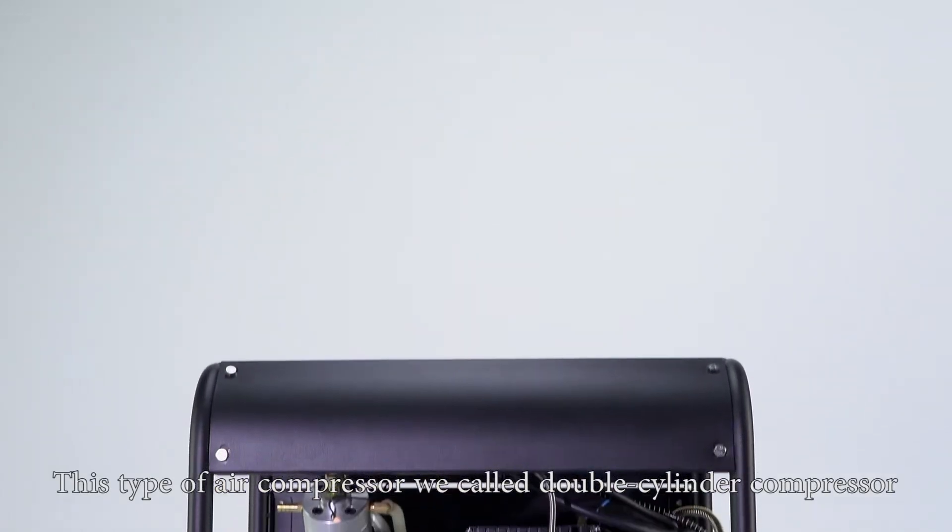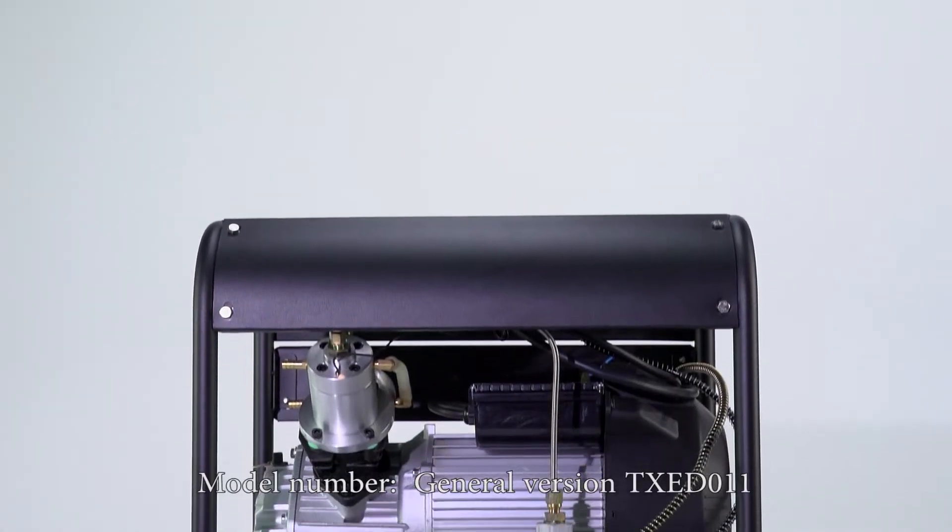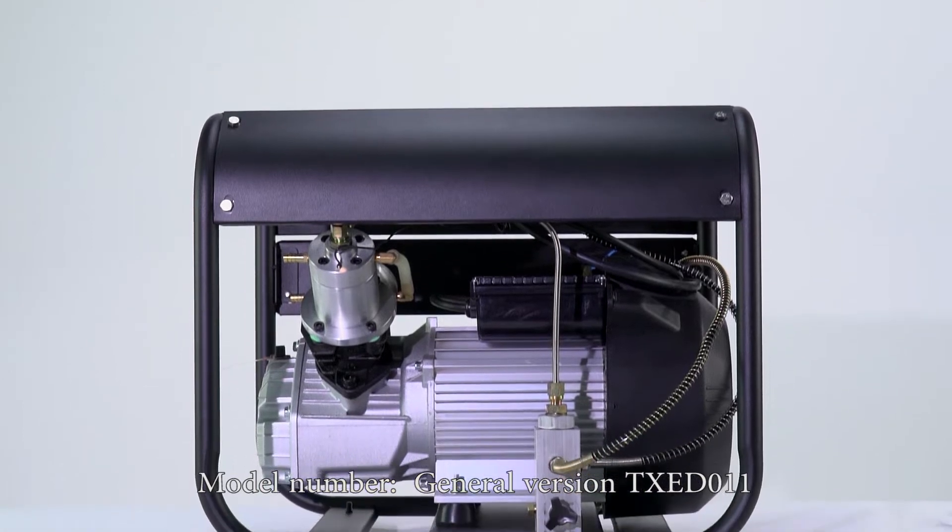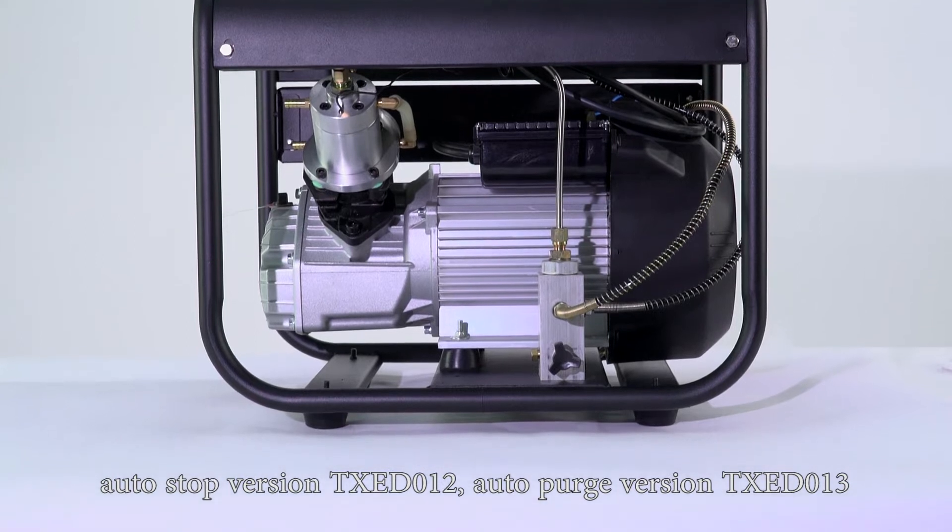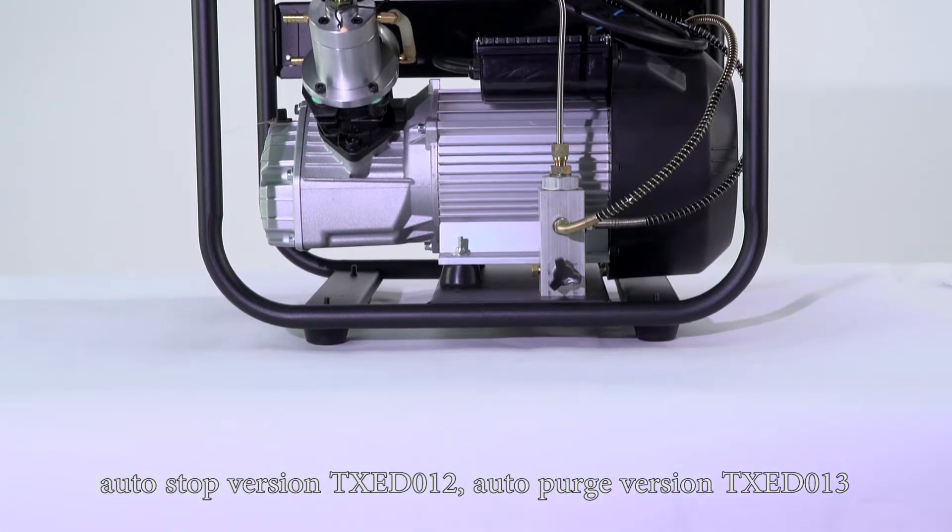This type of air compressor is called a double cylinder compressor. The model numbers are: general version TXED011, auto stop version TXED012, and auto purge version TXED013.